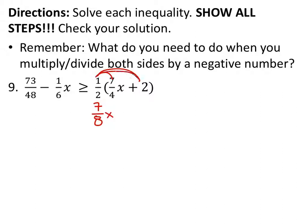And then the one-half times two there on the second part would give us, again in the calculator, plus one. So now my new inequality is seventy-three-forty-eighths minus one-sixth x is greater than or equal to seven-eighths x plus one.